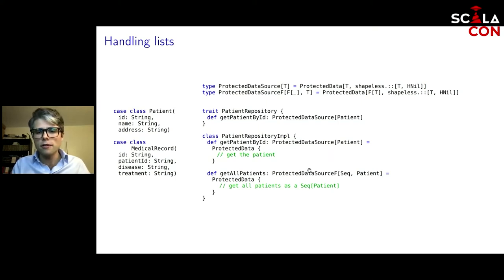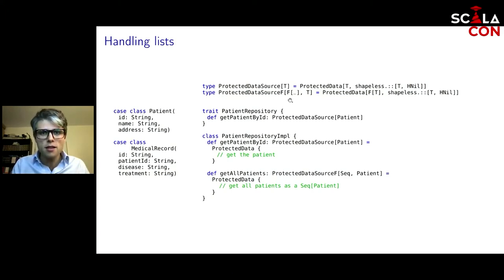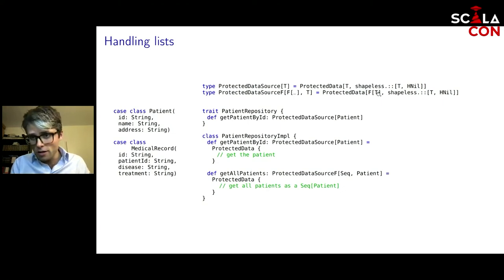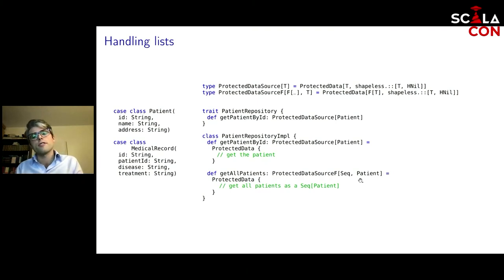Maybe we also want a method that returns a list — for example getAllPatients returning a Sequence of patients. We have a second type alias taking two type parameters, where one is a higher-kinded type. The first type inside the protected data wrapper doesn't necessarily have to be the same as the source type — here the return value is a Sequence of patients, but the data type of concern is still Patient.